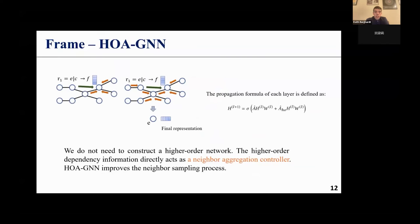Also, a new end-to-end graph neural network model is proposed. We don't need to construct a higher-order network. The higher-order dependency information directly acts as a neighbor aggregation controller. Higher-order neighbor information on higher-order dependency can be aggregated to the target node at a time. This reduces the loss of information caused by multiple transmissions.